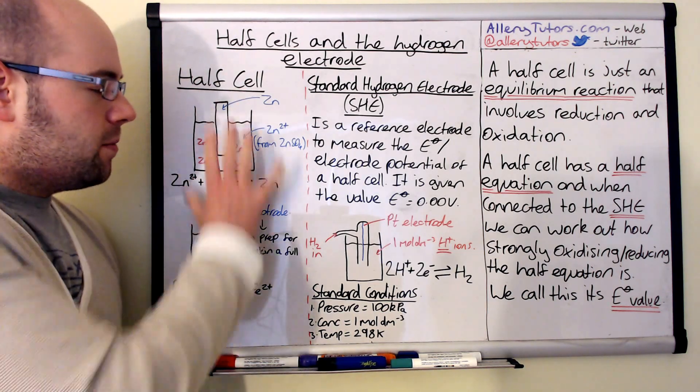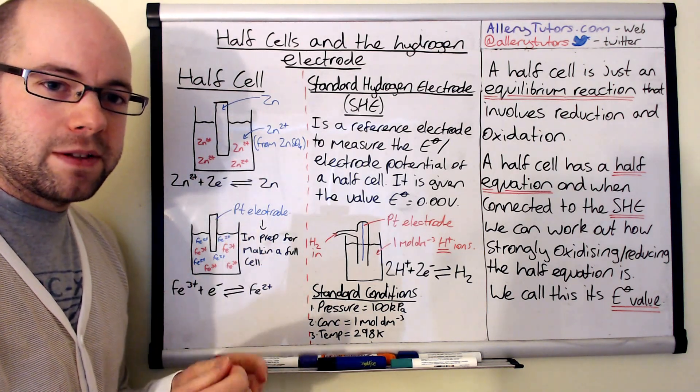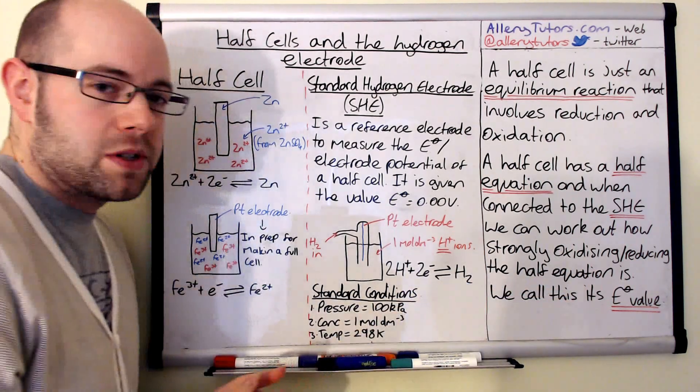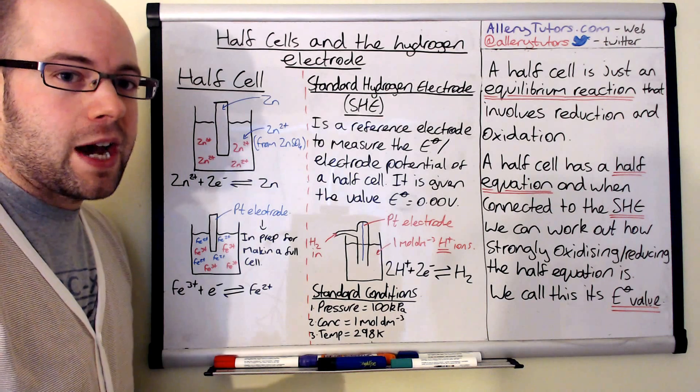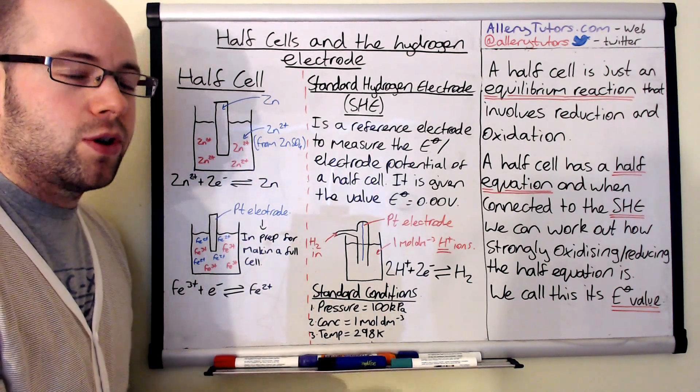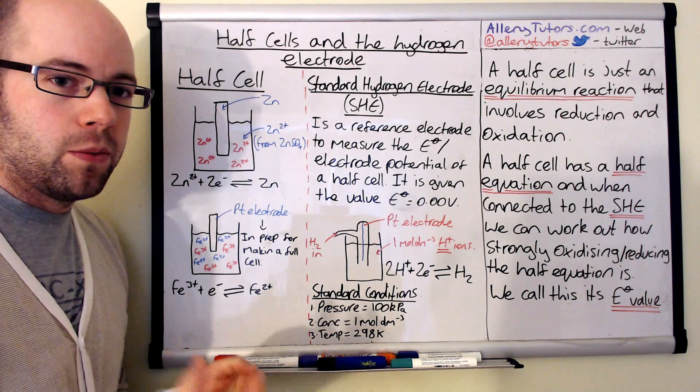These, we can connect them to something and we can measure its electrode potential. We call that an E⁰ value. This tells us how readily this solution is either going to give up electrons or receive electrons, depending on what we connect it with.